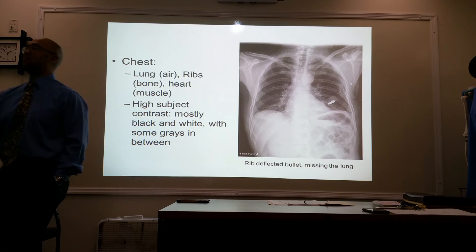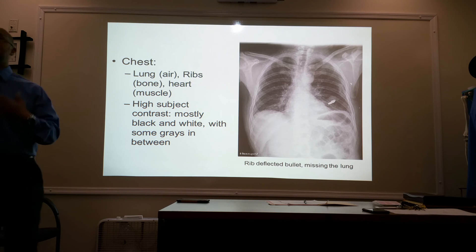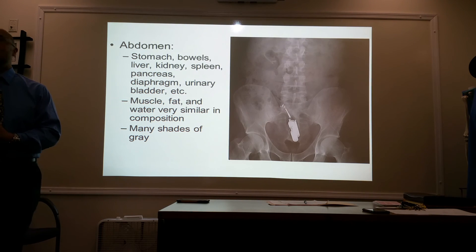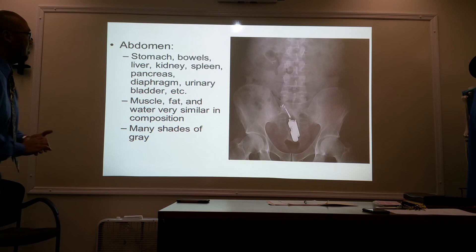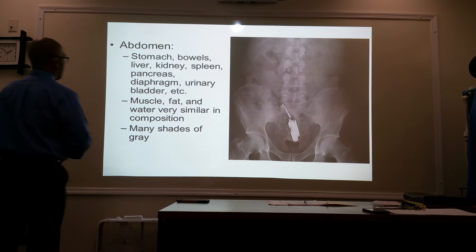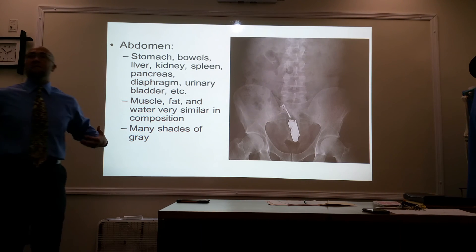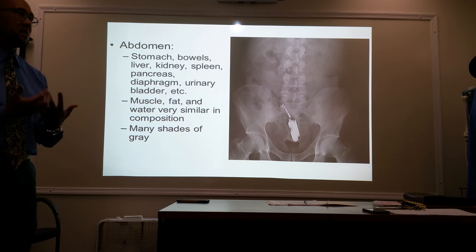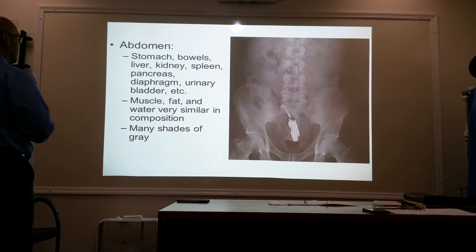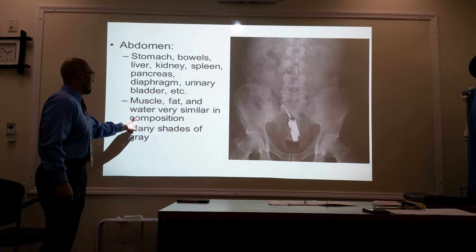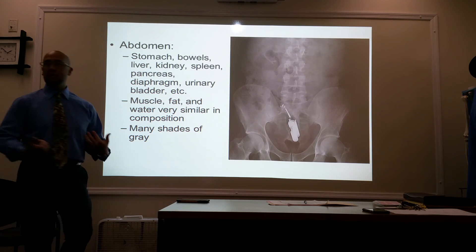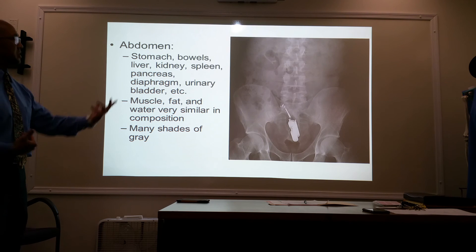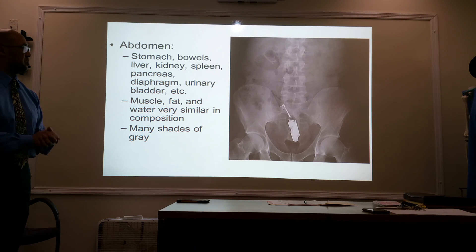Another example here is the abdomen. It's the same thickness as the chest and abdomen, but the abdomen has anatomy of a very similar composition — muscle, fat, water — very similar in the abdomen. So this is the type of radiograph that's going to give you various shades of gray.